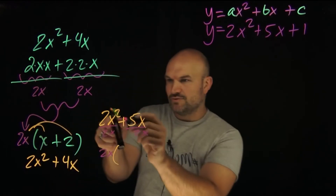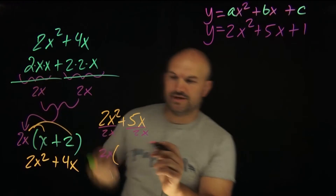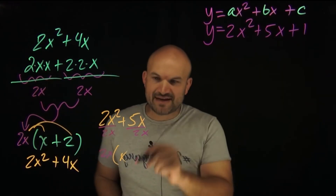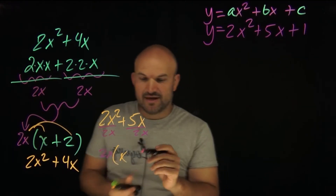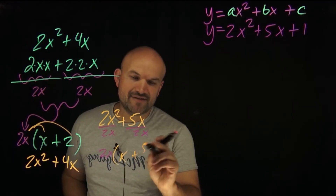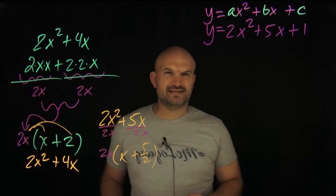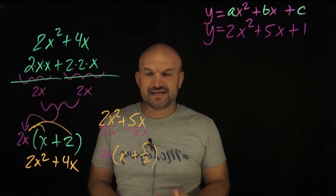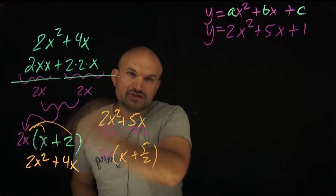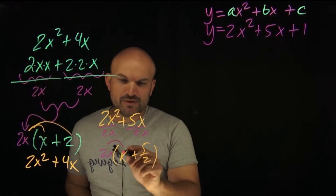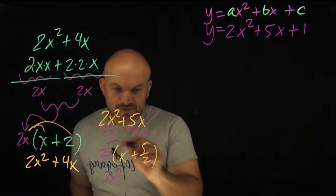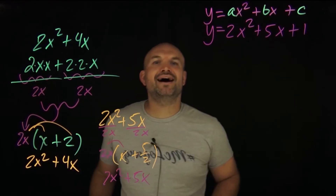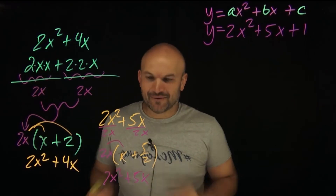2x squared divided by 2x gives us x. And 5x divided by 2x — the x's divide out — leaving us with 5 halves (5/2). So we get 2x times (x + 5/2). If you're not sure, multiply back out: 2x times x is 2x squared, and 2x times 5/2 — the 2's divide out — leaving 5x. So that confirms it works.